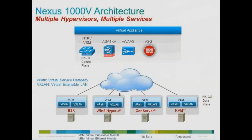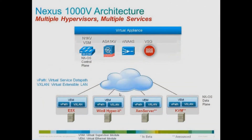It's GUI-based, which makes the N1K installation process really easy. Nexus 1000v is a distributed virtual switch for virtualized and cloud environments. Why deploy Nexus 1000v? Because it's a foundational element, effectively a platform for multi-hypervisor, multi-service and multi-cloud environment.